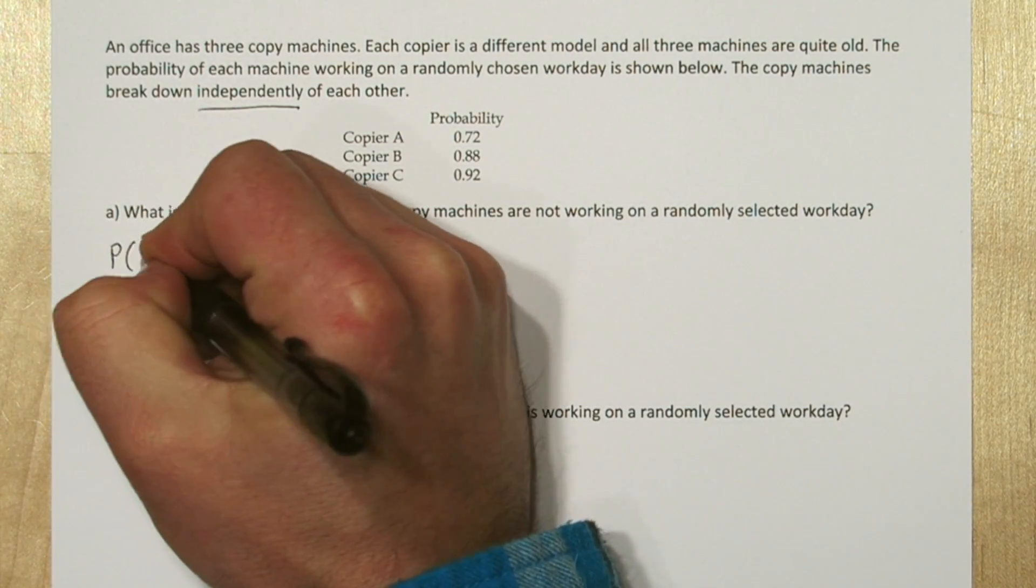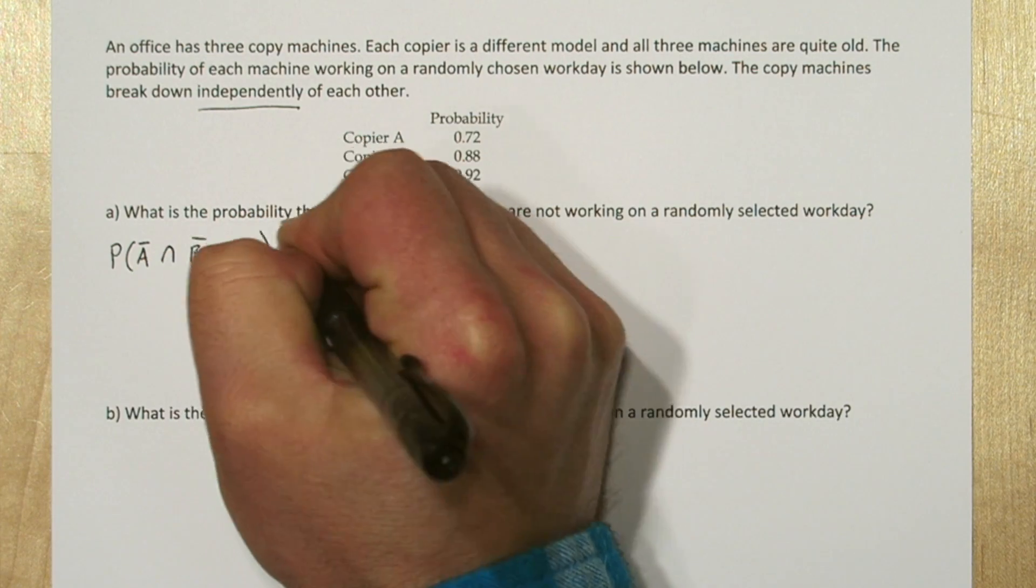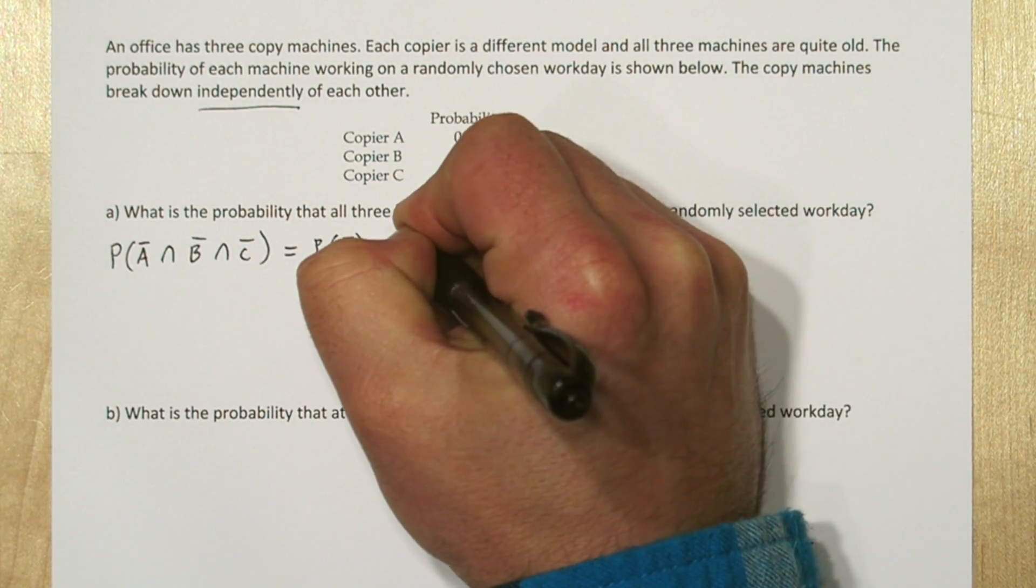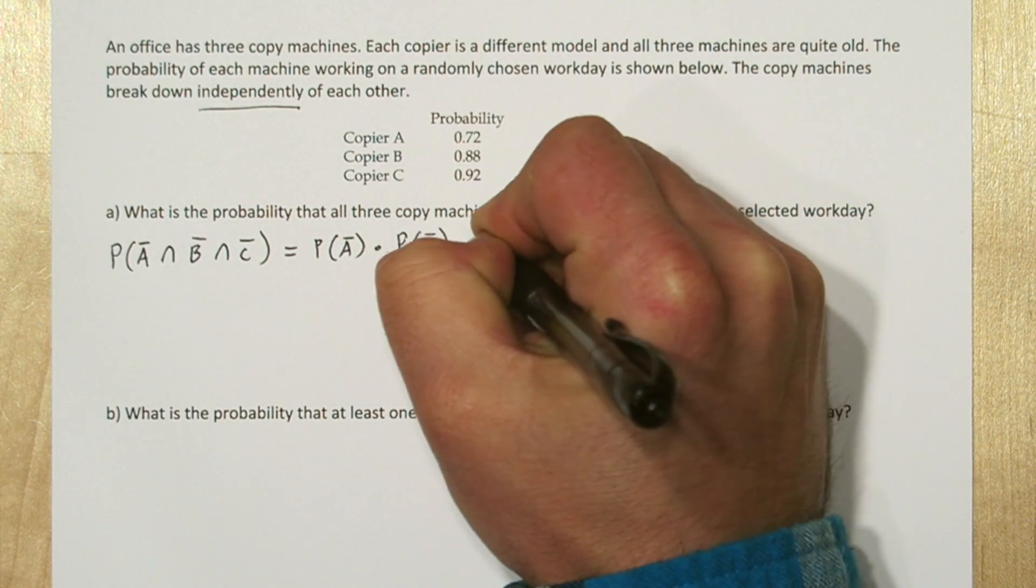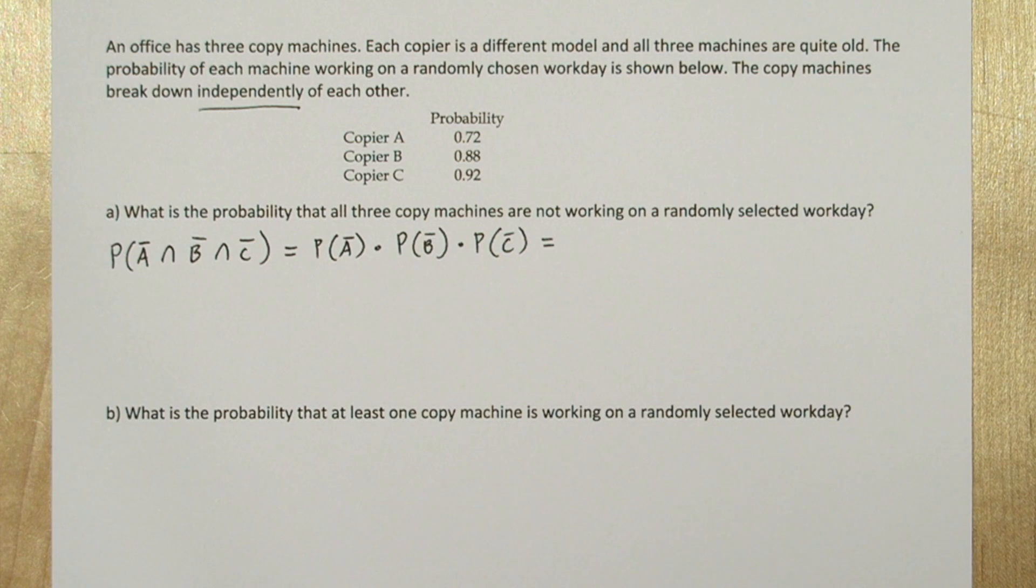We can notate the probability of all three machines not working as the probability of not A, and not B, and not C. The multiplication rule for independent events says we can just multiply the probability of not A times the probability of not B times the probability of not C.